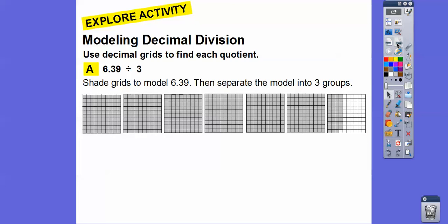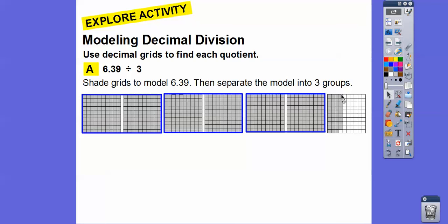Now we're going to separate the model into groups of three. Let's do the wholes first. There are six wholes, so let's separate them. There's one group, two groups, three groups. So when we separate, we know it's going to be two-something because each group has two wholes. Now let's separate these hundredths into groups of threes. I'll take this column, and since there are nine of them here, we'll take three of these — so this will be three hundredths. And then we'll take one of the tenths. So there's one group, another group, and a third group right there.